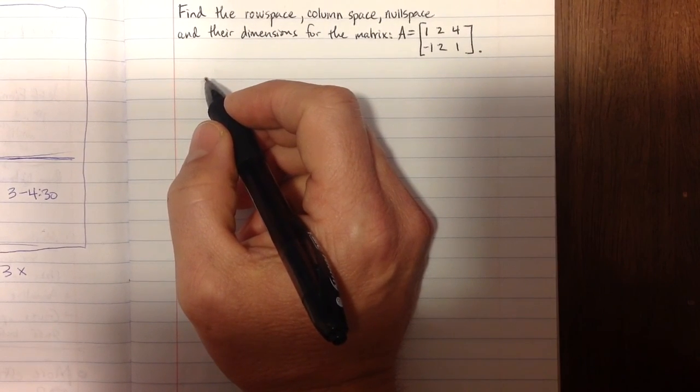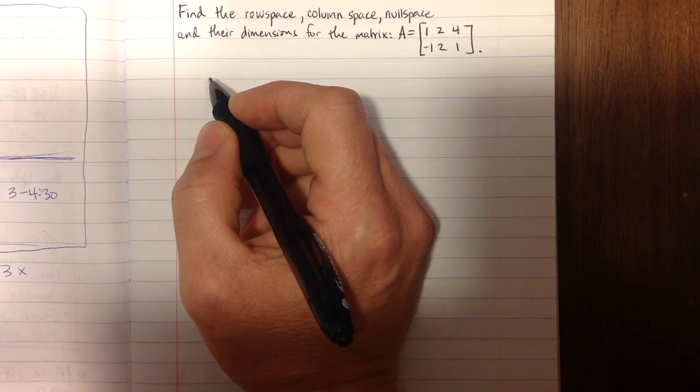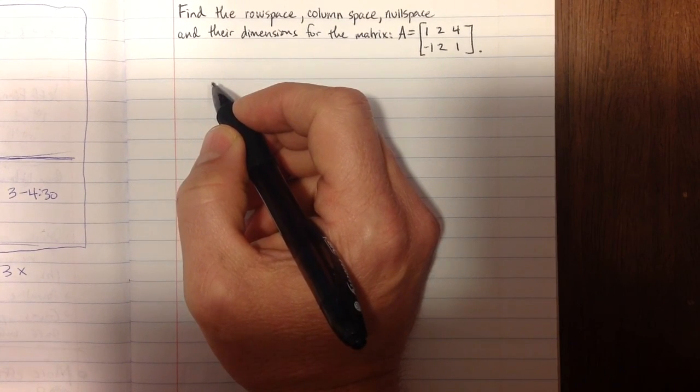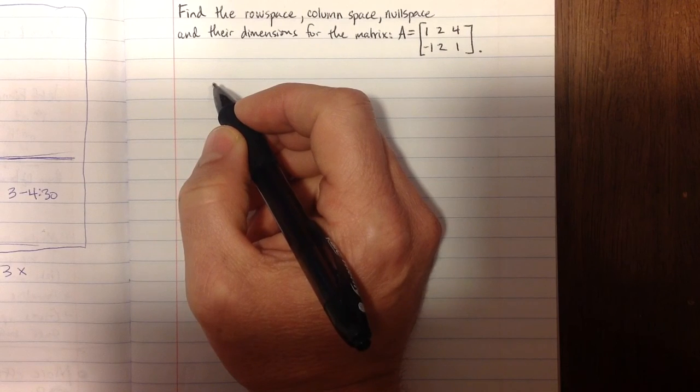Hello! We're going to be looking at finding the row space, column space, null space, and their dimensions for the matrix A, which is 1, 2, 4, negative 1, 2, 1.